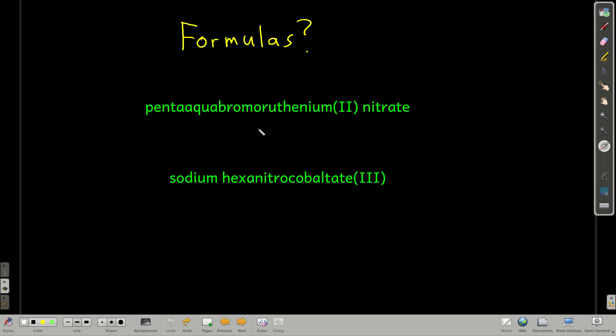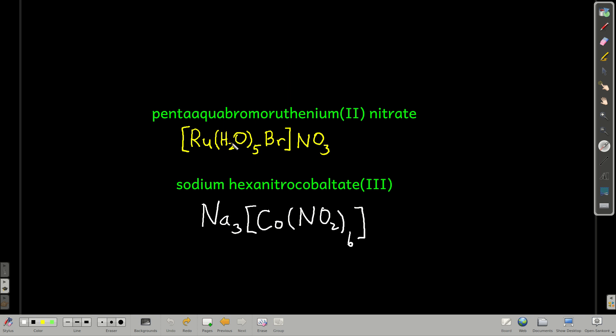Now, why don't you take these names and see if you can figure out the formulas. Penta-aqua bromoruthenium(II) nitrate. Penta is five, aqua is water, so five waters, bromo is bromine, ruthenium, nitrate. The plus two on the ruthenium, there's no charges on the waters, there's a negative one on the bromide, so that means there must be one of the nitrates, plus two, negative one, and it has to be negative one here.